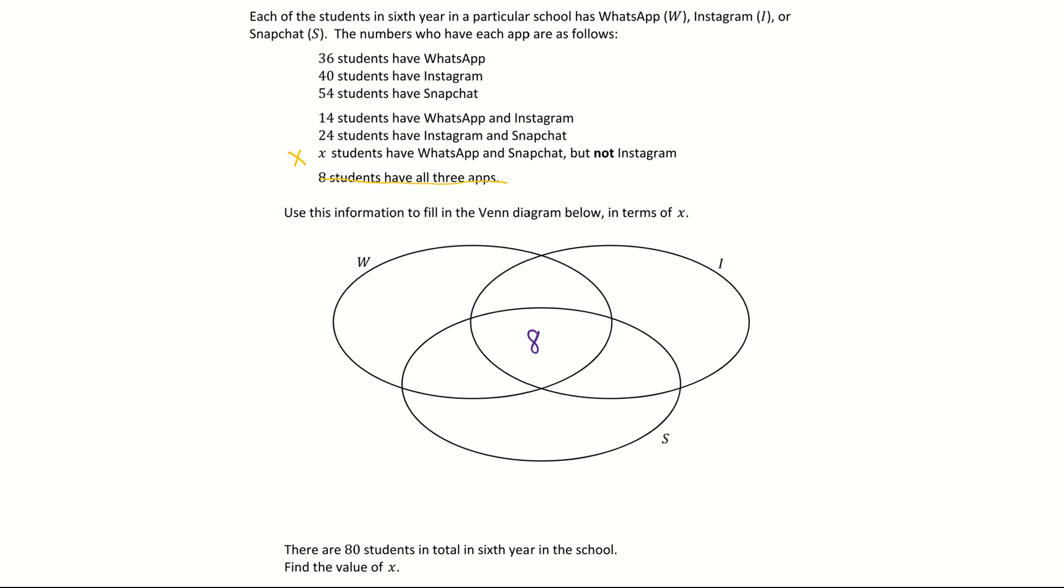The next one I'm moving on to here is the x. x students have WhatsApp and Snapchat but not Instagram. So I'm coming down to WhatsApp and Snapchat and I'm filling in x. Again I don't need to do anything with the eight because it excludes anyone that has Instagram. That's why it says but not Instagram. So that's the first two done.